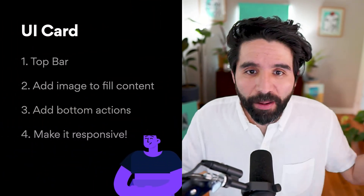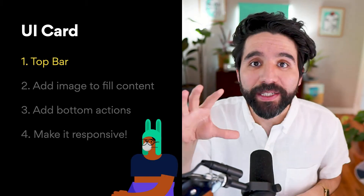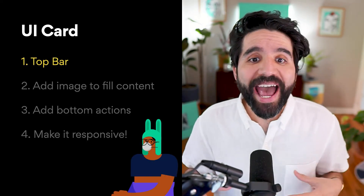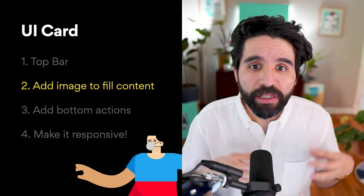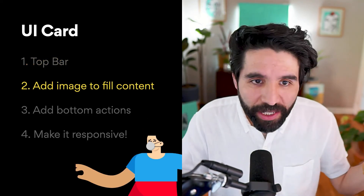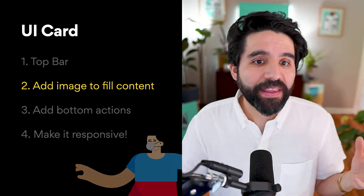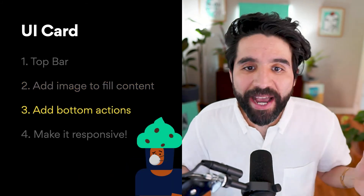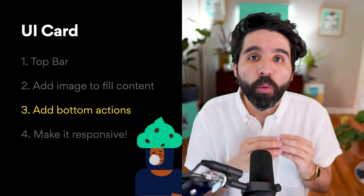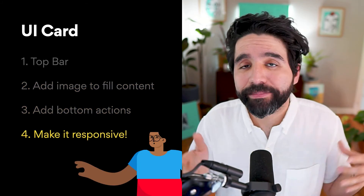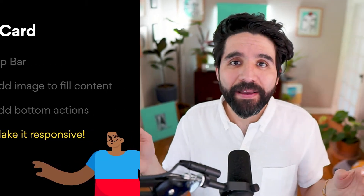First we'll create the top-level card with auto spacing, then we'll add an image that fills the container from left to right, and then we'll add some actions below with dynamic spacing. That's it — let's do this.